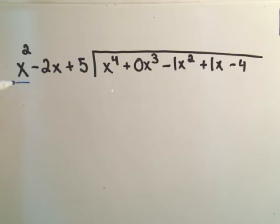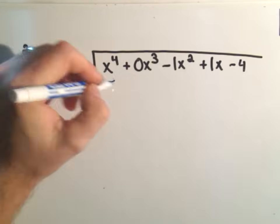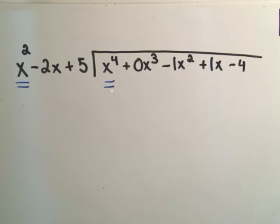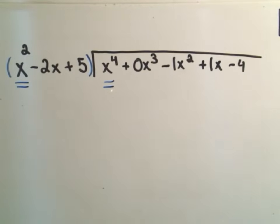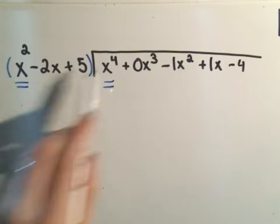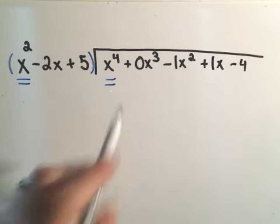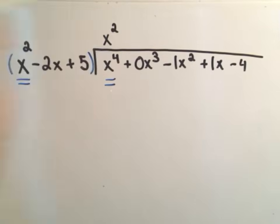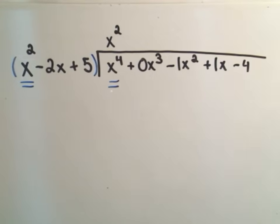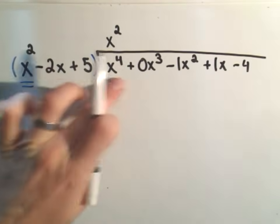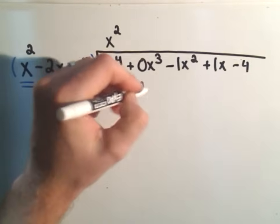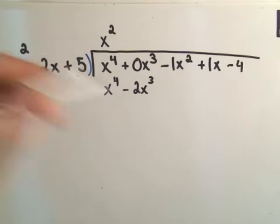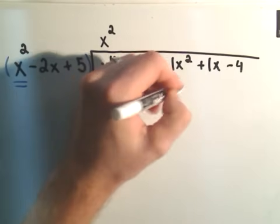You just focus in on the highest powered things, x squared and x to the fourth. I went ahead and put my stuff in parentheses just to remind myself to distribute everything out. So I think x squared times what is x to the fourth? Well, I'll need another x squared when I do that. So I have to distribute x squared to everything. So I'll get an x to the fourth term, I'll get minus 2x to the third, and it looks like I'll get positive 5x squared.